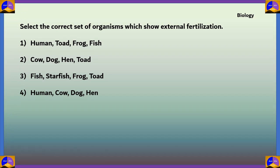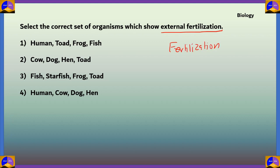The next question: select the correct set of organisms which show external fertilization. Option 1: human, toad, frog, fish. Option 2: cow, dog, hen, toad. Option 3: fish, starfish, frog, toad. Option 4: human, cow, dog, hen. Fertilization is divided into two types: internal and external.